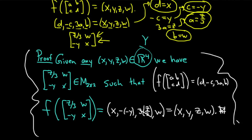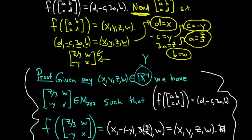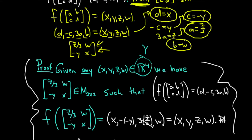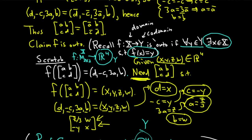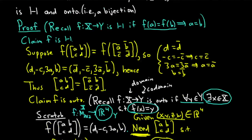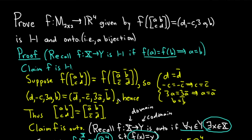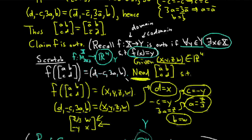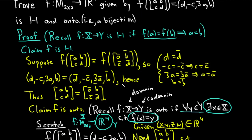The proof of onto is straightforward once you figure it out. Because f is 1 to 1 and onto, it's also called a bijection — therefore f is a bijection. It's not really a hard problem; it's just knowing how to use the definitions, understanding them, and applying them carefully. I hope this video has been helpful to someone learning to write proofs. Good luck.